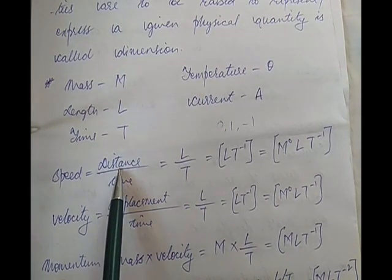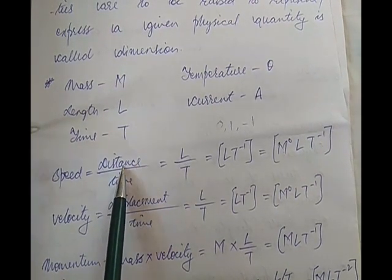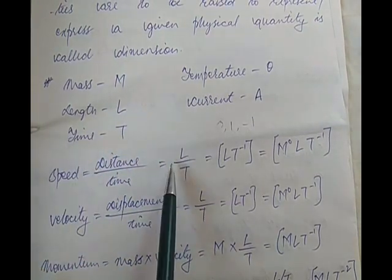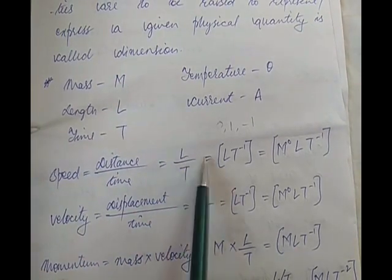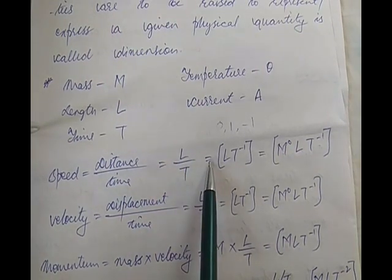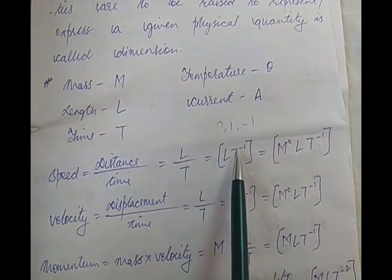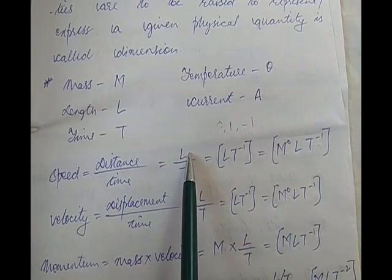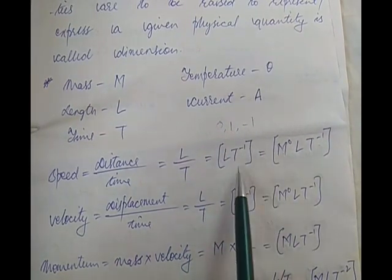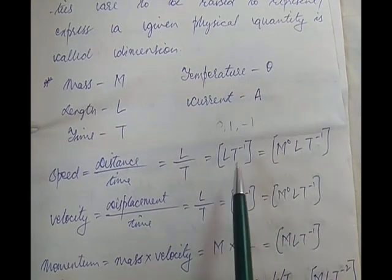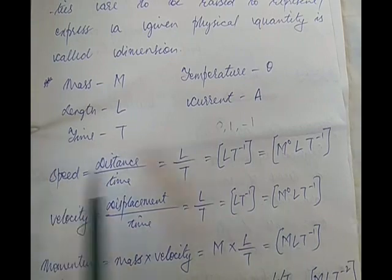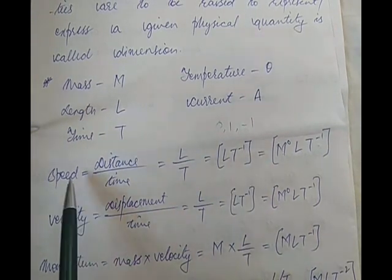See how. Distance is basically length, so instead of distance we write capital L. So we have L divided by time, which is capital T. I take T to the numerator, so this becomes L T to the power minus 1. This thing inside the bracket is what is called the dimensional formula for speed — L T inverse.